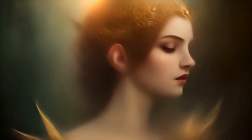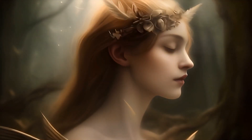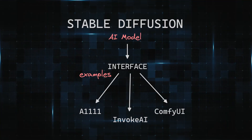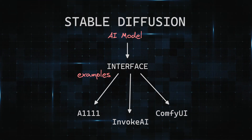Stable Diffusion is an AI model to generate images and videos as well from a text description. Unless we are very good with coding, how can we interact with this platform? There are some interfaces we can use. The most famous is Automatic1111, but there are also others like InvokeAI and ComfyUI.